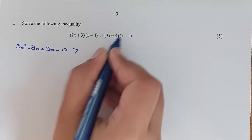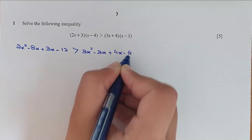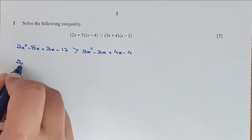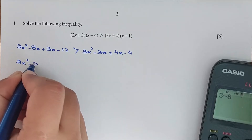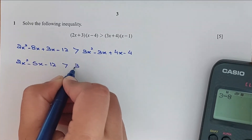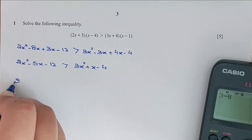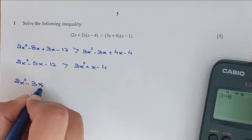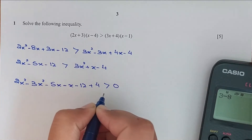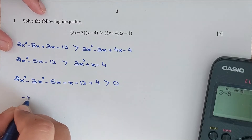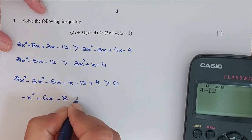Which is greater than 3x squared minus 3x plus 4x minus 4. So 2x squared, and 8 take away 3 is minus 5, and 3 minus 8 is minus 5. Minus 5x minus 12 is greater than 3x squared plus x minus 4. Shifting all the terms over: 2x squared minus 3x squared minus 5x minus x minus 12 plus 4 is greater than 0. This is minus x squared minus 6x minus 8 is greater than 0.